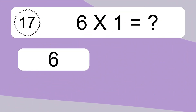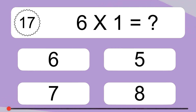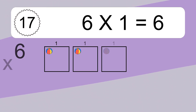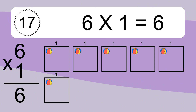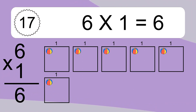6 times 1 equals what? 6 times 1 equals 6. We have 6 boxes, and each box has 1 colorful ball inside. If you count all the balls in all the boxes together, you will have 6 times 1 balls. This equals 6 balls.